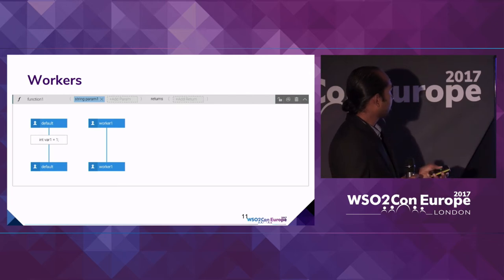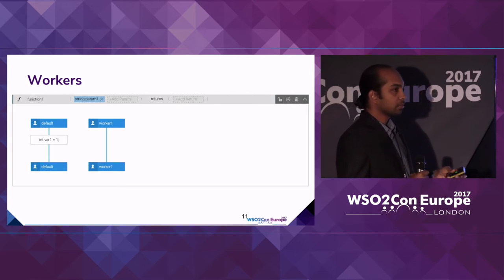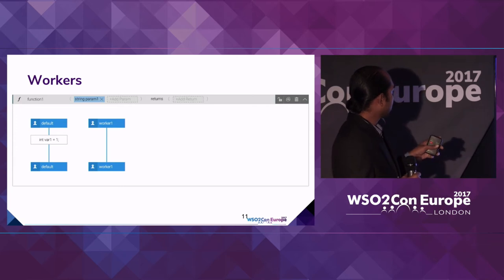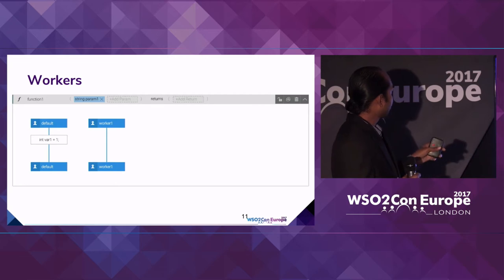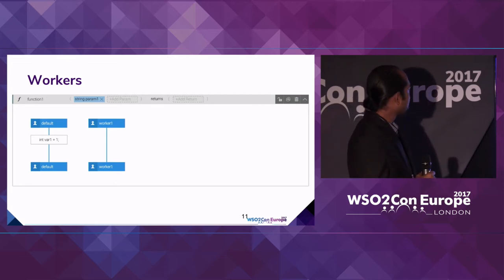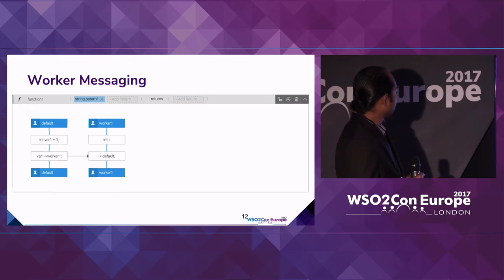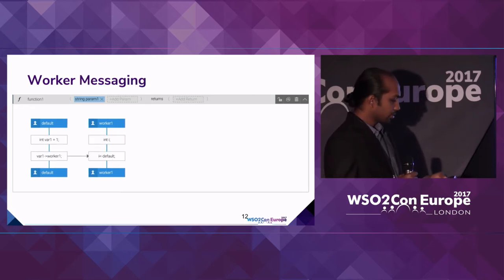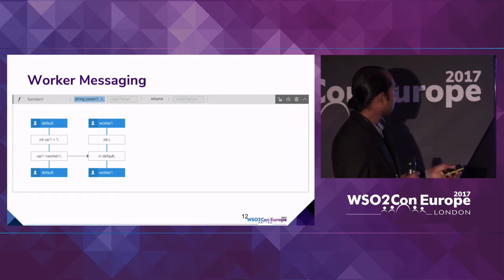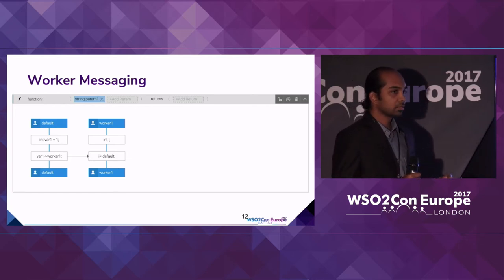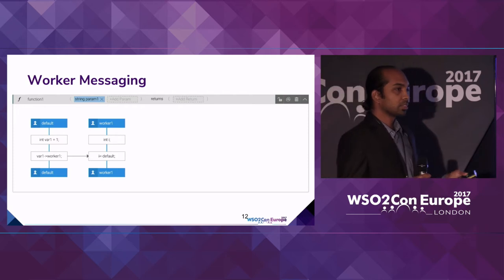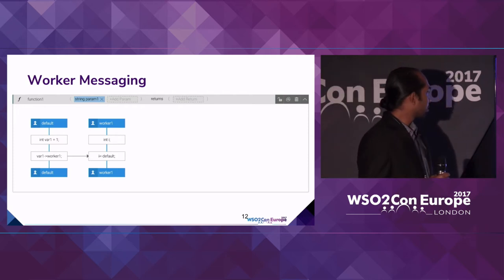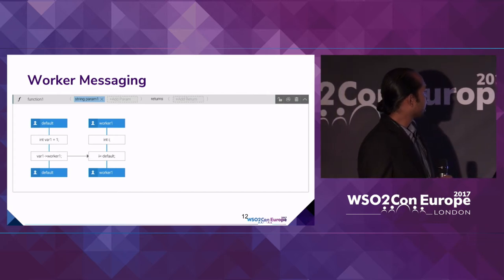This is how we symbolize multiple workers. For each execution thread or worker, we draw a separate lifeline, and these separate lifelines can have their own statements. This is how we represent worker-to-worker communication — there are two statements: a worker send statement and a receive statement. We show the communication with a directed arrow between the send and receive statements.